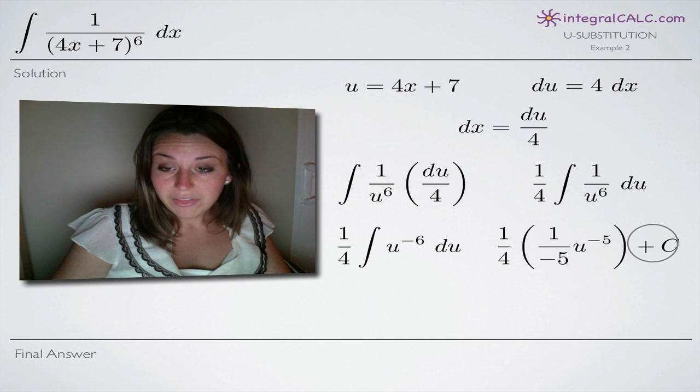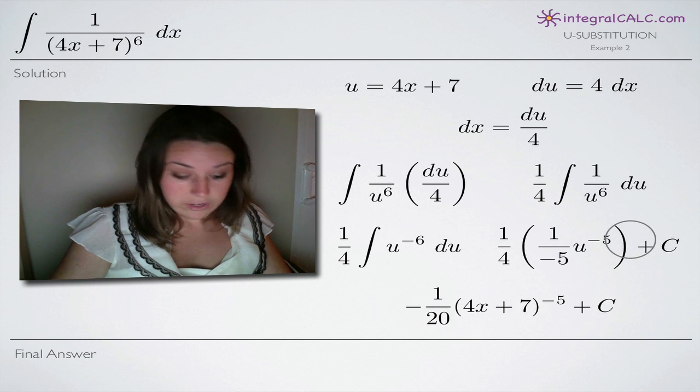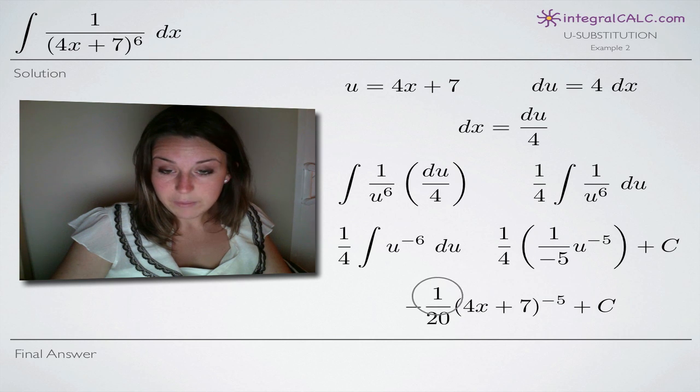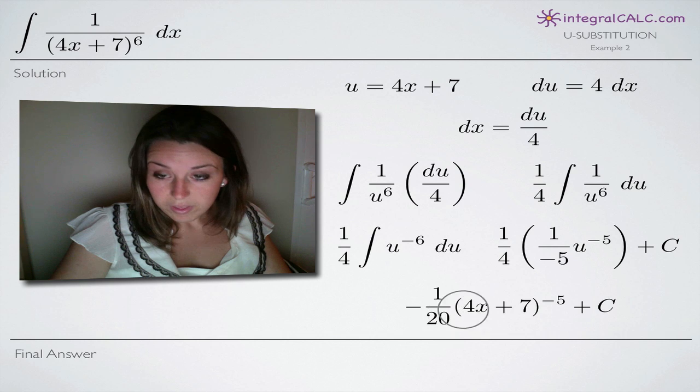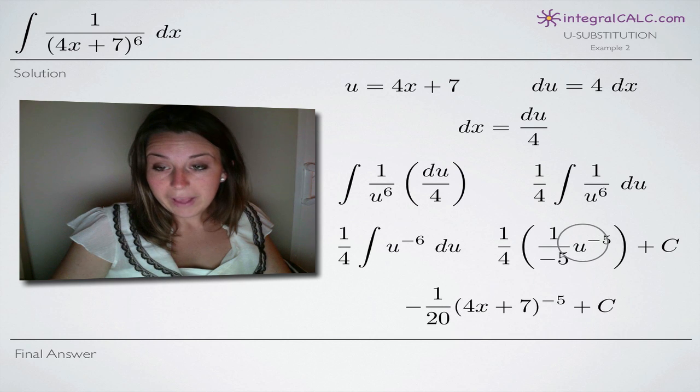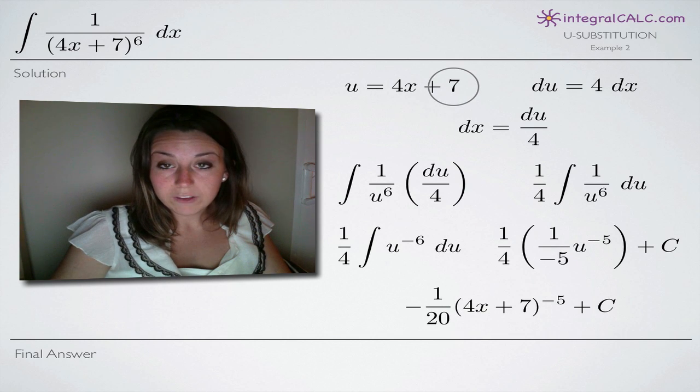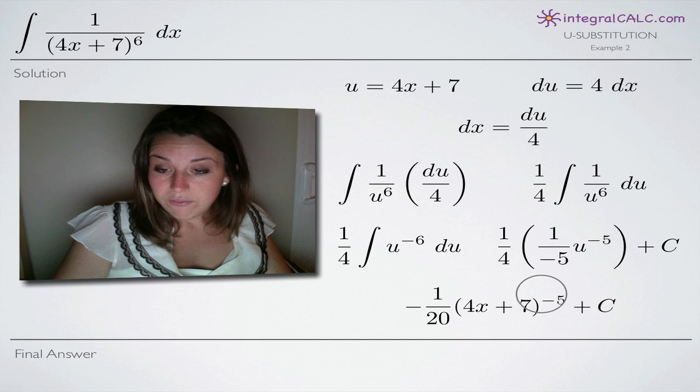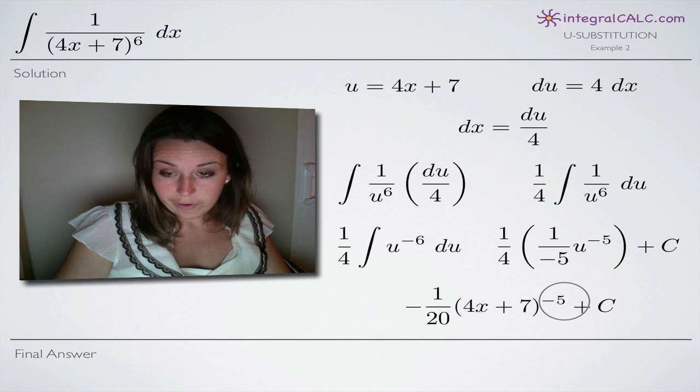Now we'll simplify our integral and we'll end up with 1 here in the numerator and a negative 20 from this 4 times a negative 5. So that's the same as negative 1 20th and then we substitute back in for u. So we grab this 4x plus 7, we put it back in for u and we have the negative 5 still here as our exponent.